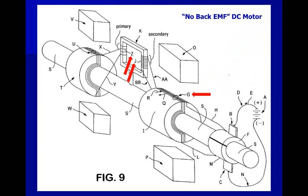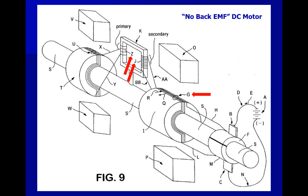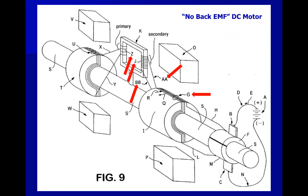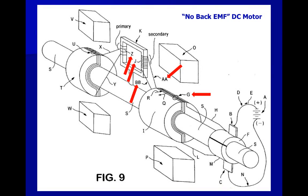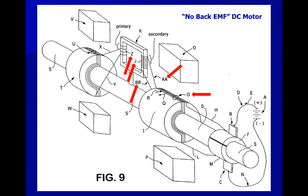The windings on cancellation transformer K are selected to cause the voltage on conductor J to equal or be very close to the back EMF in main armature winding G. Because the voltage on conductor J is engineered in this way, and because conductors AA and BB place this voltage into main armature winding G, all or nearly all of the back EMF in main armature winding G is removed.